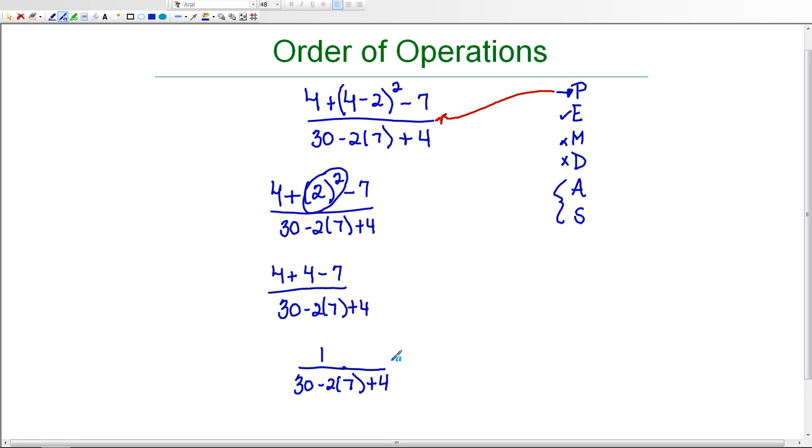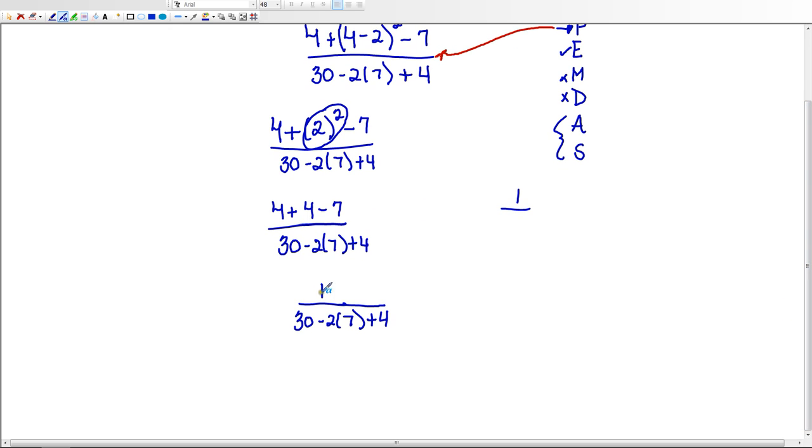But I'm not finished because remember our grouping symbol, the fraction bar, told us that we needed to evaluate the numerator first, but now we need to evaluate the denominator. So I'm going to move over here just to give me some more room. 1 is our numerator and now I need to go back through the order of operations again with the denominator.